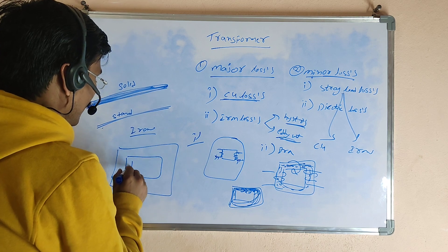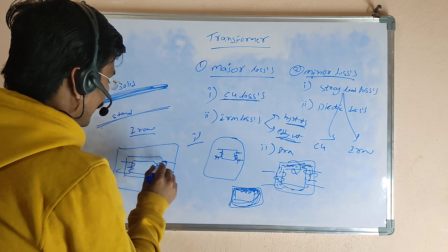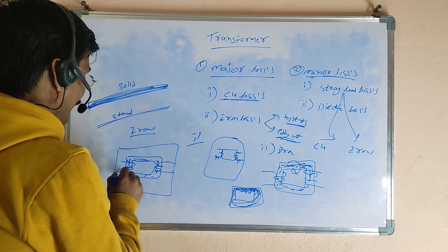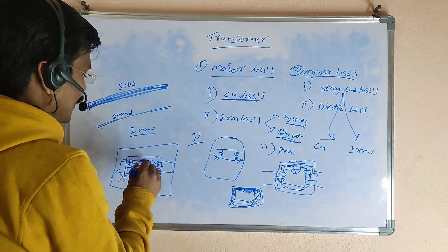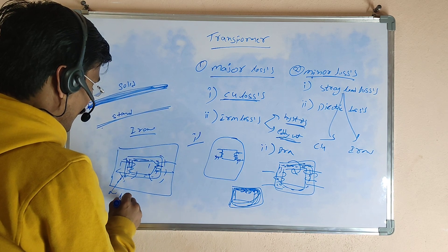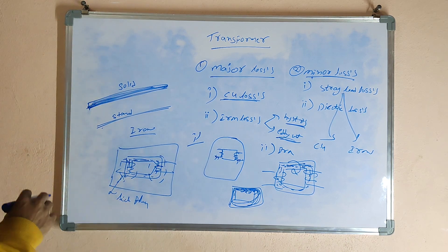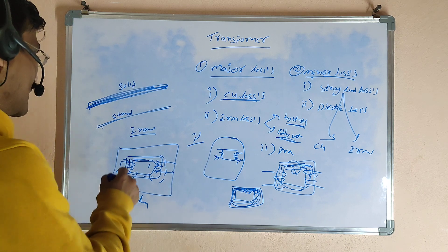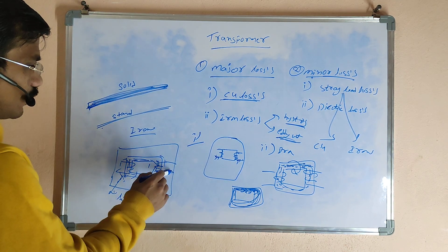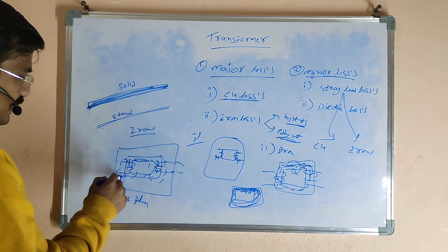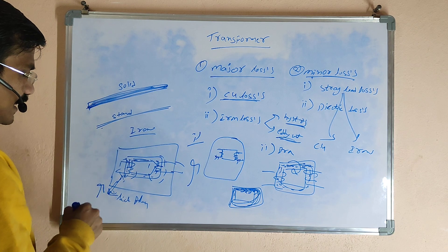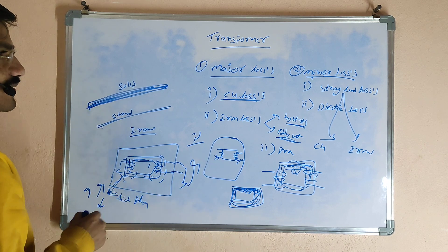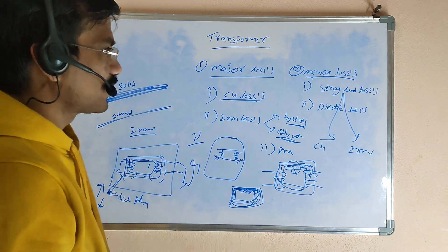The iron stray load losses happen inside the transformer. The core produces a main flux, but some flux leaks out toward the tank — this is called leakage flux, and the associated loss is called iron stray load losses. These losses depend on load current: as load current increases, leakage flux increases and iron stray load losses increase; as load reduces, leakage flux and losses reduce accordingly.